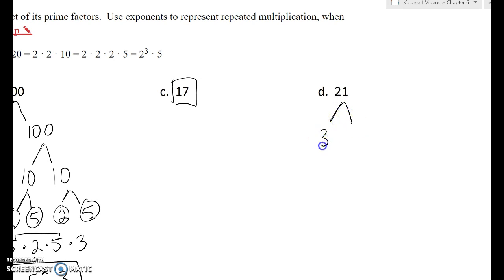21 is just 3 times 7. 3 is a prime factor. 7 is a prime factor. The prime factorization of 21 is just 3 times 7.